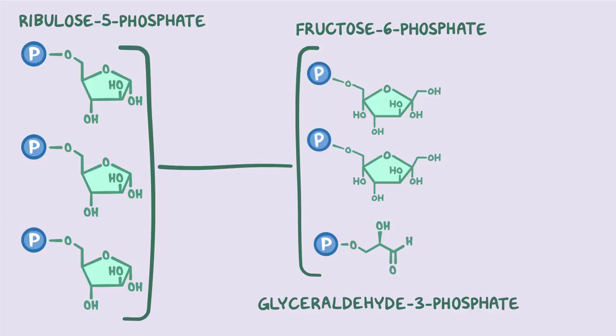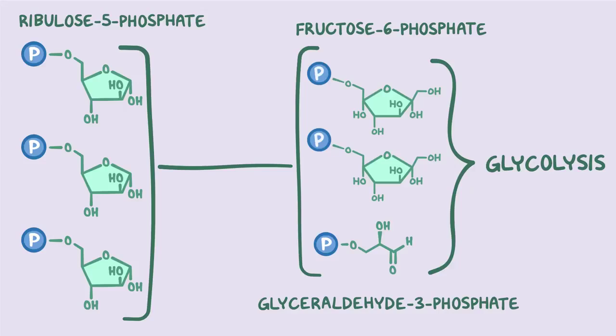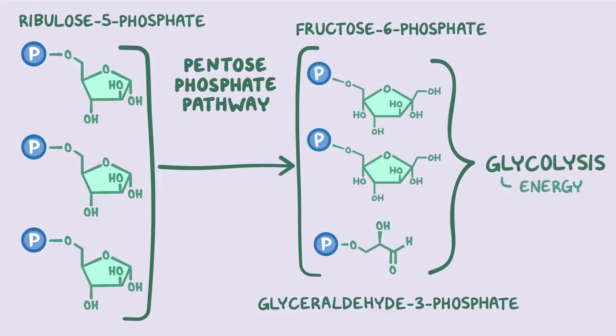Both glyceraldehyde-3-phosphate and fructose-6-phosphate are intermediate molecules in glycolysis. So even in the middle of the pentose phosphate pathway, the cell can decide to divert toward glycolysis if it needs more energy, and vice versa. If the cell is in the middle of glycolysis but realizes it needs to craft some nucleotides instead, transketolase and transaldolase can convert glyceraldehyde-3-phosphate and fructose-6-phosphate back to ribulose-5-phosphate.